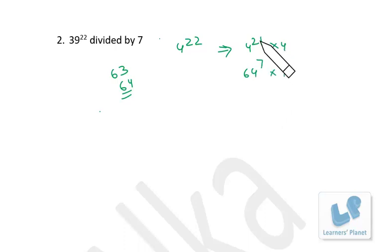21 can be written as 3 times 7, so 4 cubed raised to 7, which is 64 raised to 7. Now divide this term by 7. 64 can be written as 63 plus 1 raised to 7, so the remainder will be 1 raised to 7, which is precisely 1.